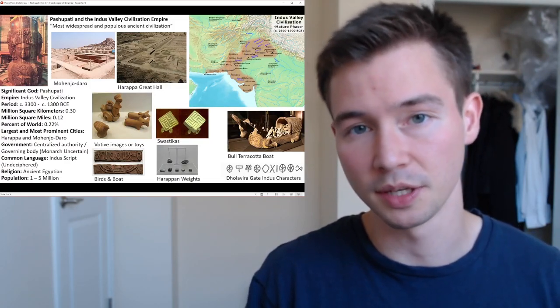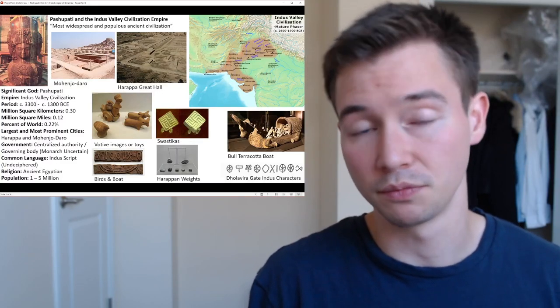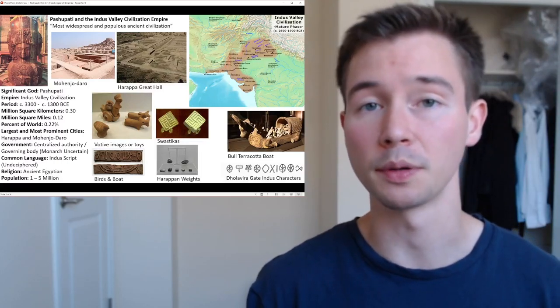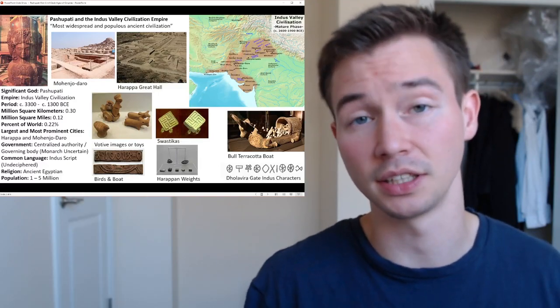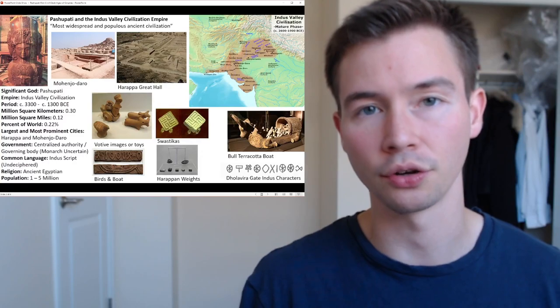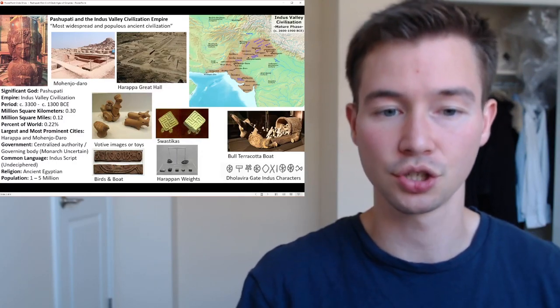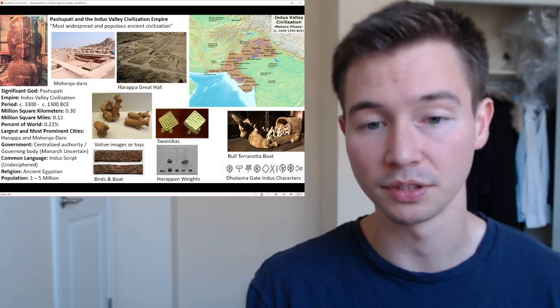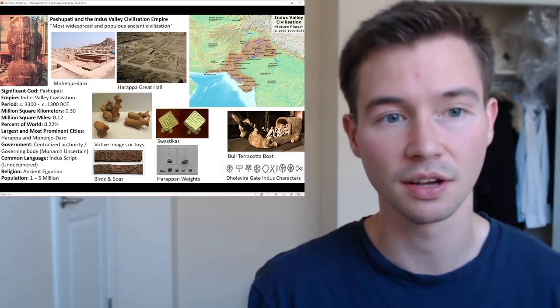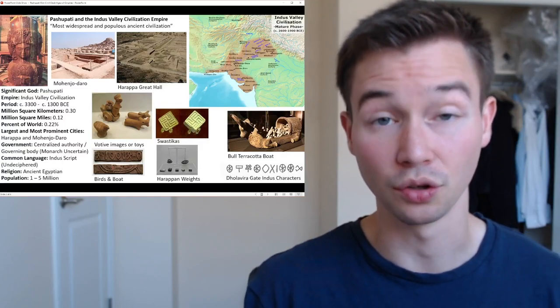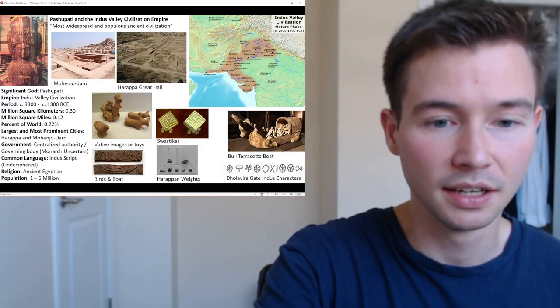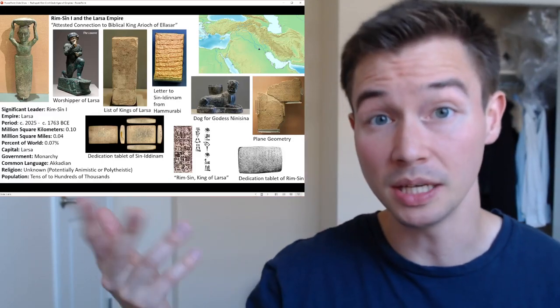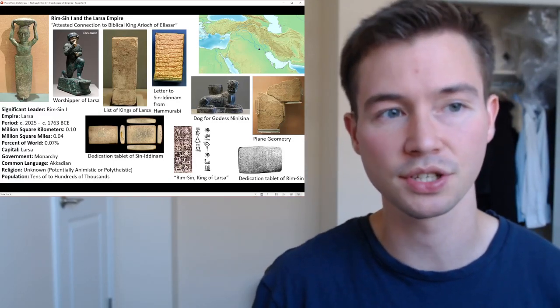To the right, we have Harappan weights, which is something very sophisticated to have, maybe as far back as 3,300 BCE, having a weighting system. To the right, we have some symbols in the Indus script, that sit above the Dol-La-Vira gate, in Indus characters, so if anyone might be able to decipher that, that is a significant achievement waiting to be undiscovered. So, without further ado, we'll move to Rim-Sin, the first and the Larsa Empire.